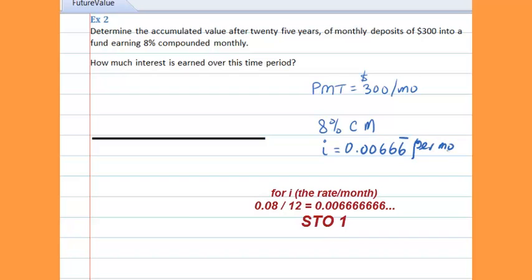If you end up with a repeating decimal, make sure you use the memory function on your calculator. Store this in memory 1: 0.08 divided by 12. Store all of it in memory. Don't round that off to 0.006667. You're going to end up with a lot of error, particularly when you involve annuities.